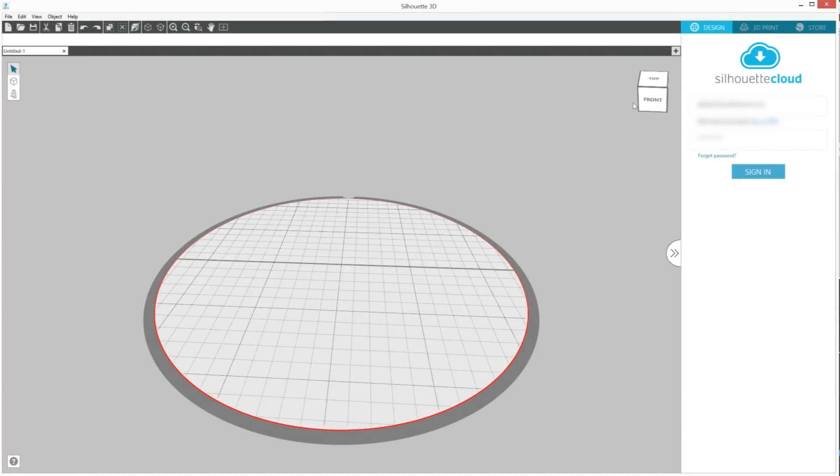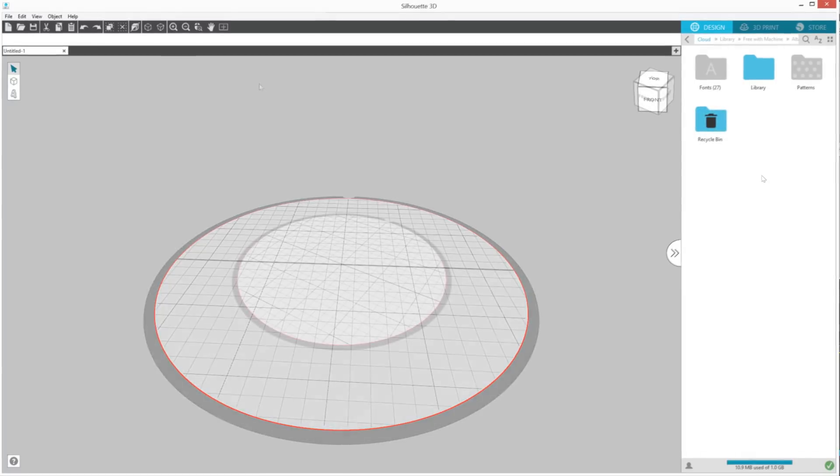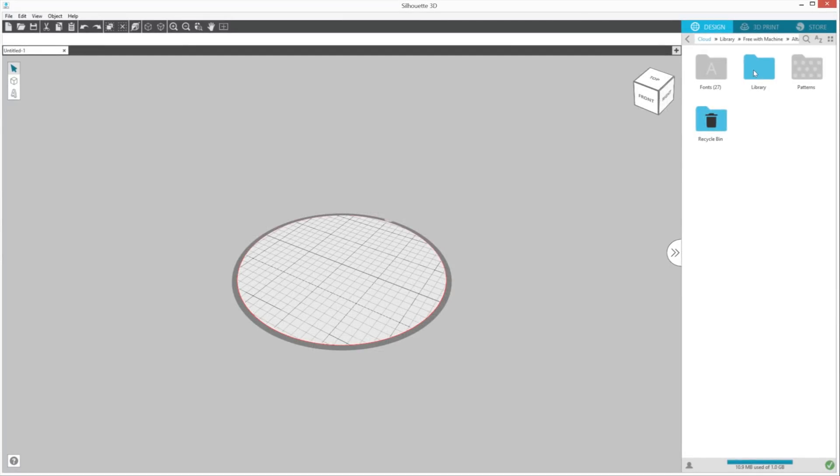On the right-hand side of the screen, sign in to your pre-existing or newly created Silhouette account to access the designs in your library. This is where you will be able to access your designs, including 3D designs for the Alta.